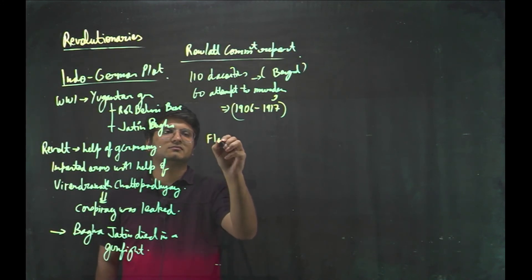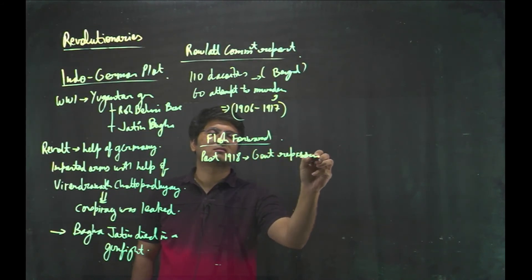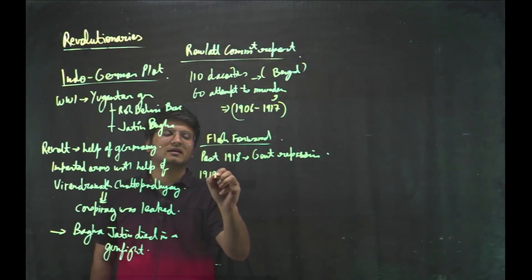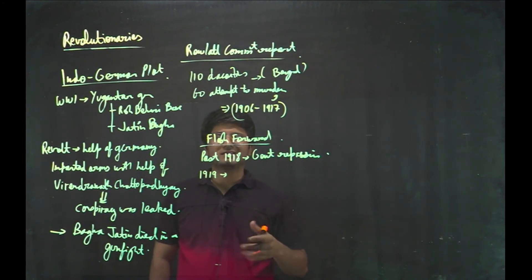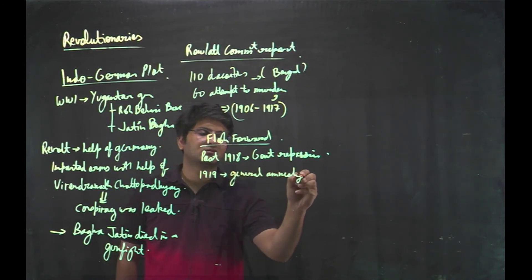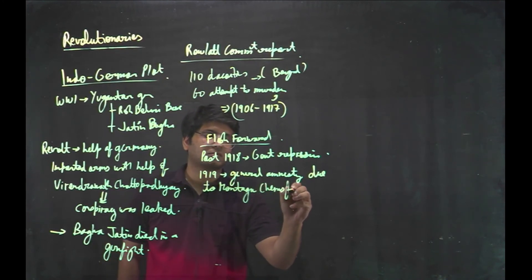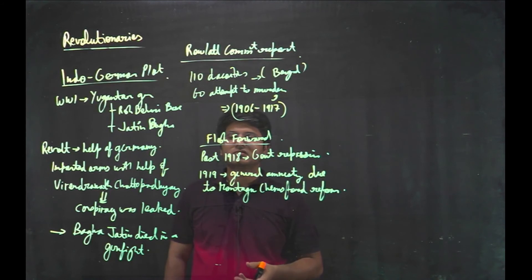So now, if we want to connect the dots, so next sequence. Flash forward. Post 1918 revolutionary activities declined due to government repression. Then in 1919 many revolutionaries were released as general amnesty because of the coming of Montagu-Chelmsford reforms.